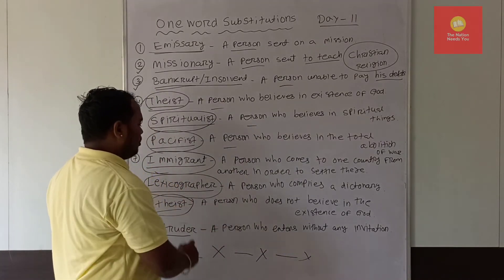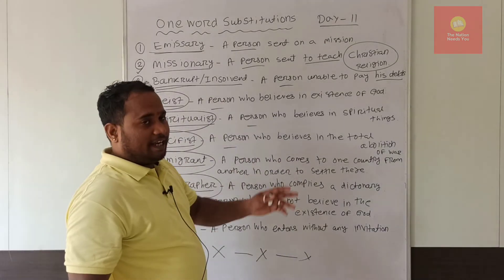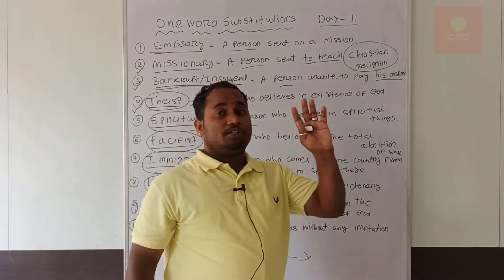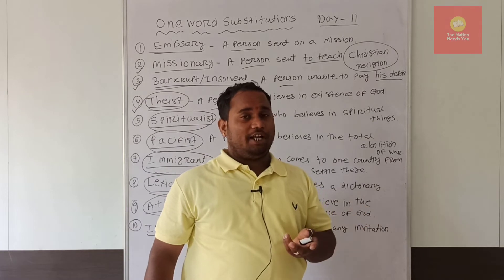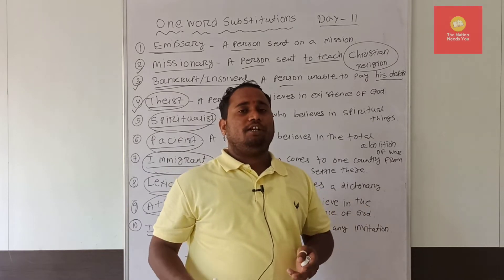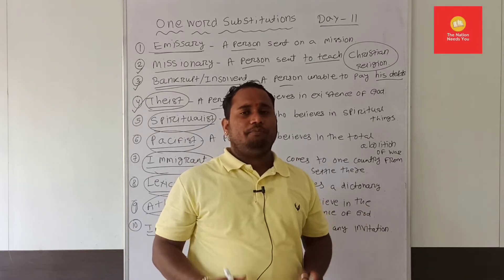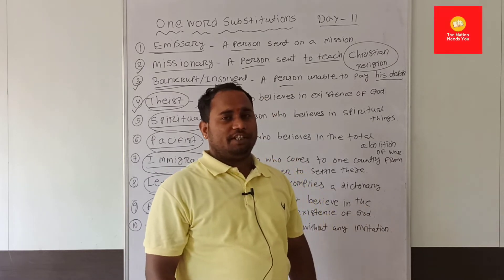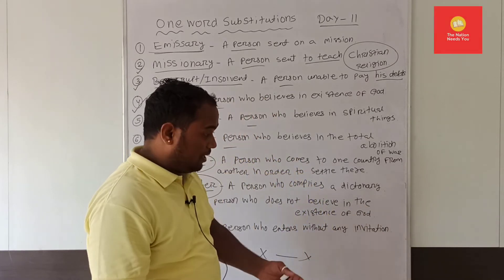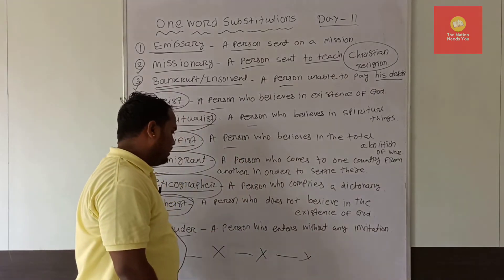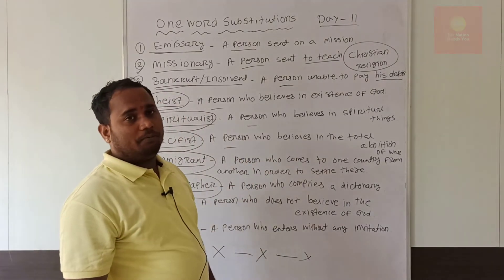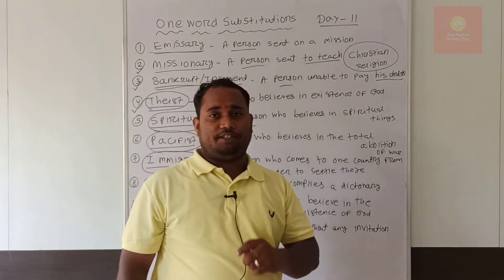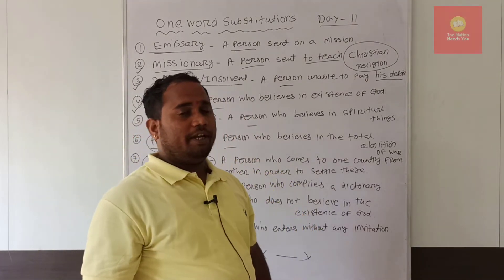Next word: 'atheist.' An atheist is a person who does not believe in the existence of God — someone who neither believes in God nor accepts God's presence. That person is called an atheist. There are quite a few atheists around.